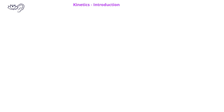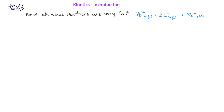In previous laboratory experiences, you may have carried out chemical reactions that took place very quickly. For example, you may have mixed a solution of lead 2+ ions with a solution of iodide ions, and when you did this, you very quickly saw a bright yellow precipitate, which was the lead 2 iodide.